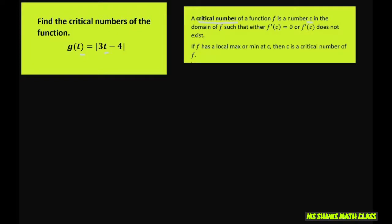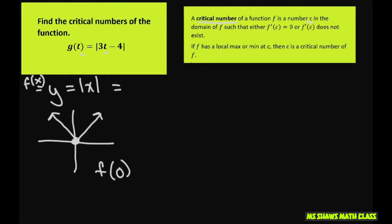I want to look real quick at just the absolute value of x. This is a piecewise function. We all know that it looks like this. It does have a minimum value here at zero. So f(0), call this f(x), equals zero. So that is a critical value.